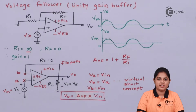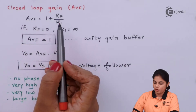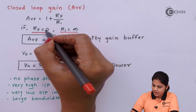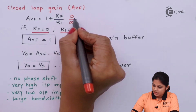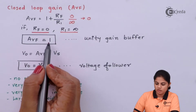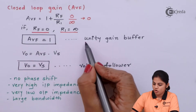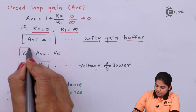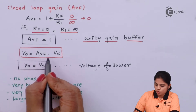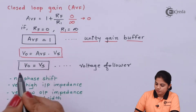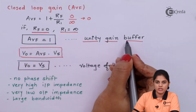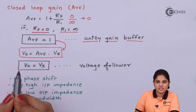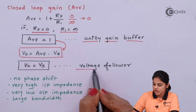Now let's derive the expression. The closed-loop gain AVF equals 1 plus RF over R1, but we have assumed RF equals 0 (short circuit) and R1 equals infinite. Substituting these values, RF over R1 becomes 0, so AVF equals 1. This is why it is called a unity gain buffer — the gain of the amplifier equals 1. Substituting AVF equal to 1 into the output voltage expression gives V0 equal to Vs. That means the output of this amplifier is exactly the same as the input voltage, which is why it is called a voltage follower.